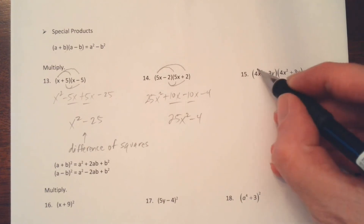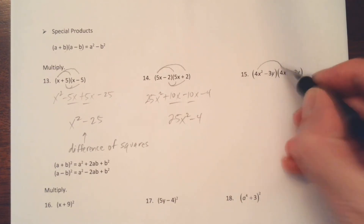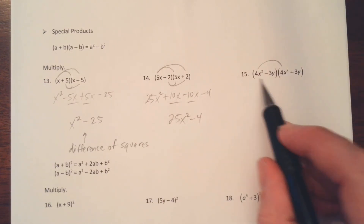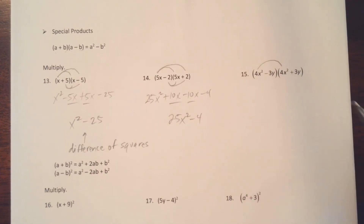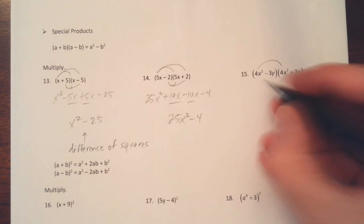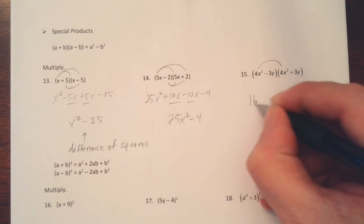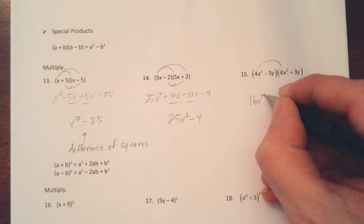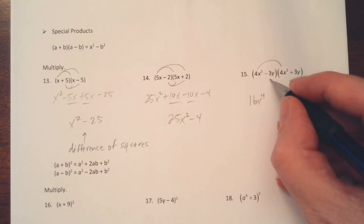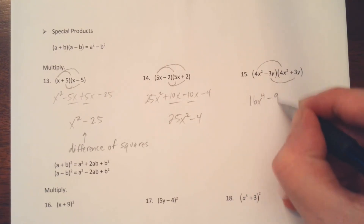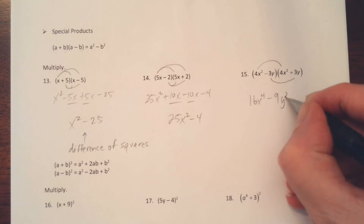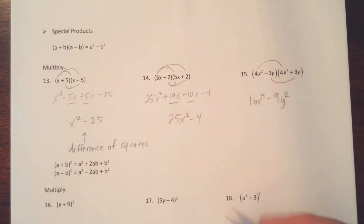In this last problem we have the same thing — same terms, opposite signs — so this will be 16x to the 4th minus 9y squared, and we're done.